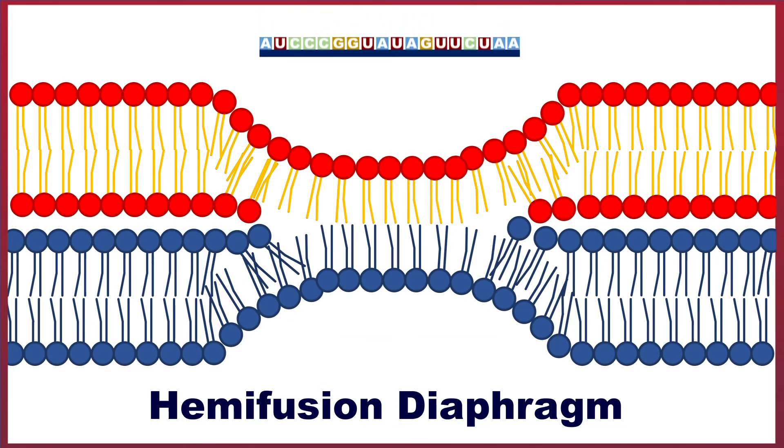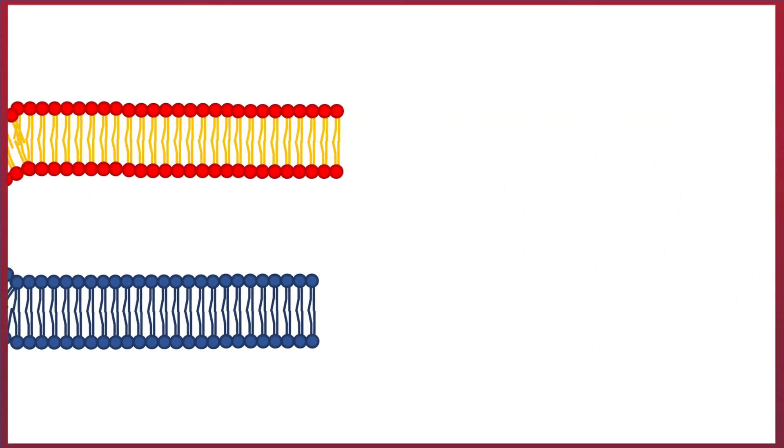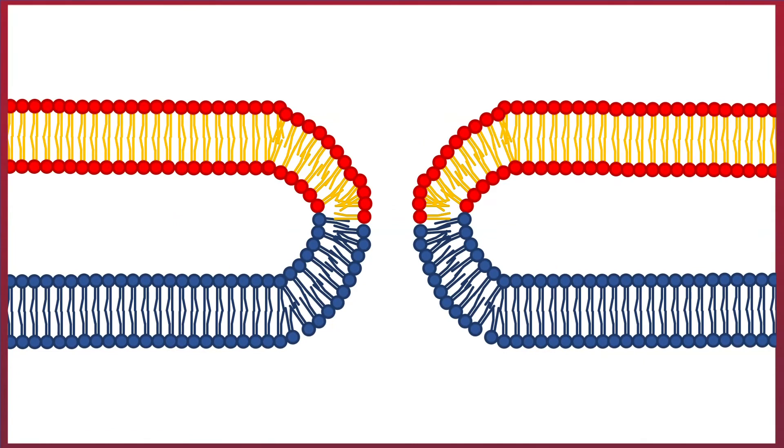This keeps the viral genome from entering the cytosol until the second step. In the second step, the fusion proteins disrupt the single bilayer to create a pore which produces an aqueous pathway between the virus and the host cell. This pore allows the viral genome to enter the cell to begin infection.